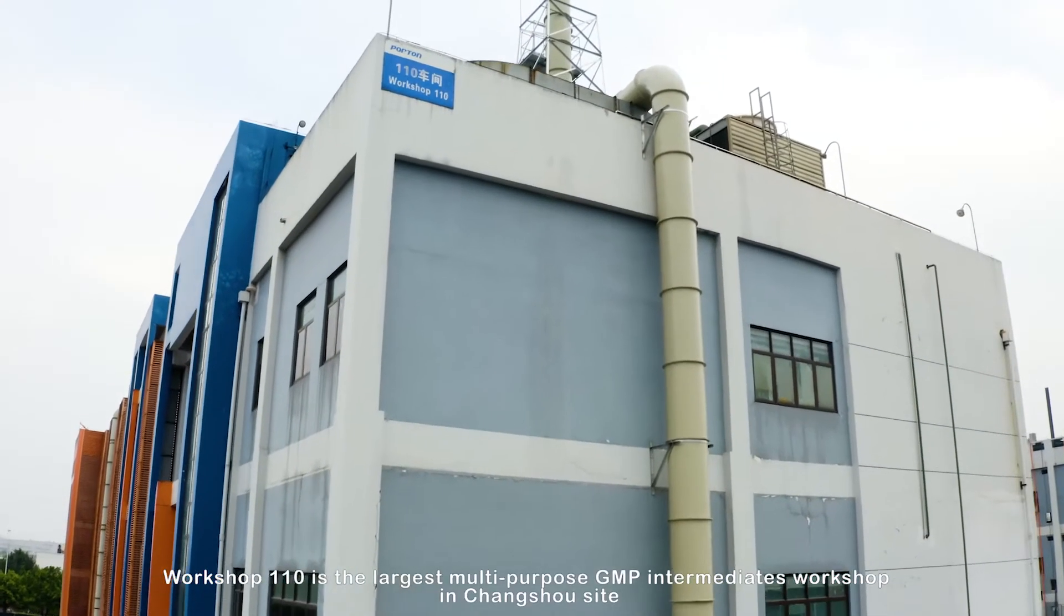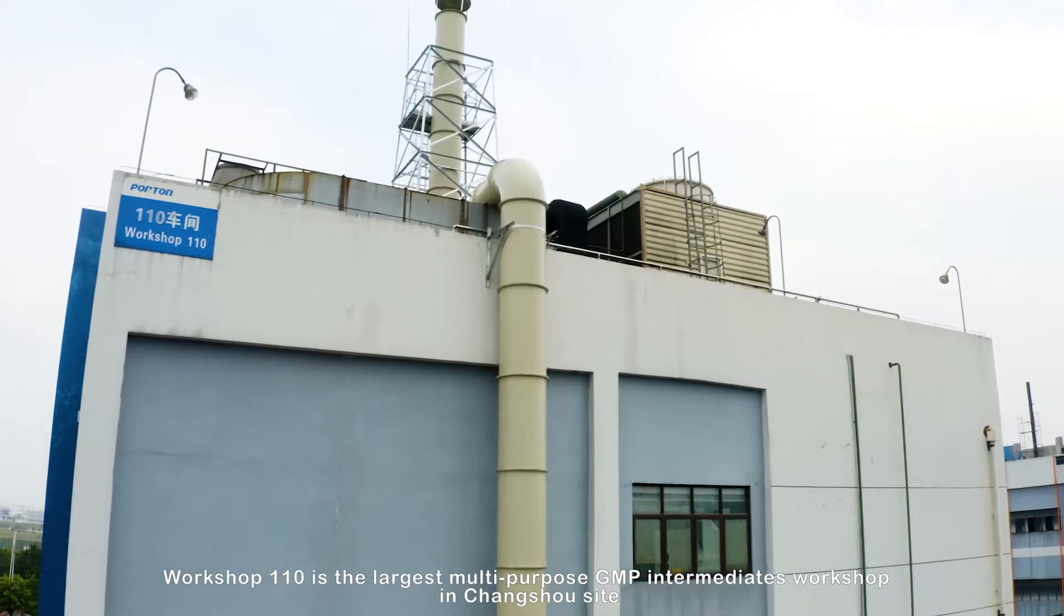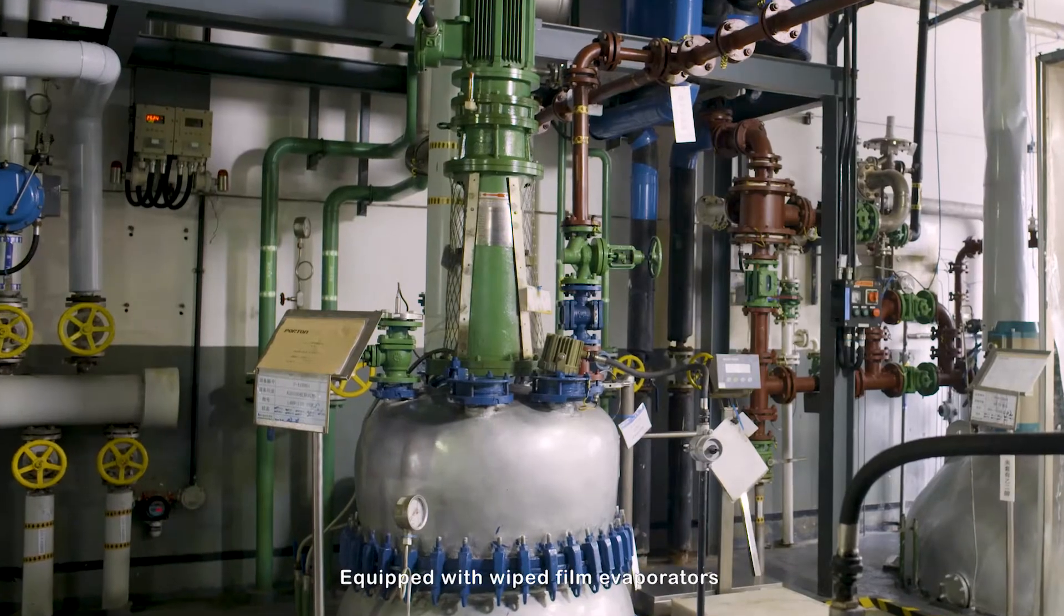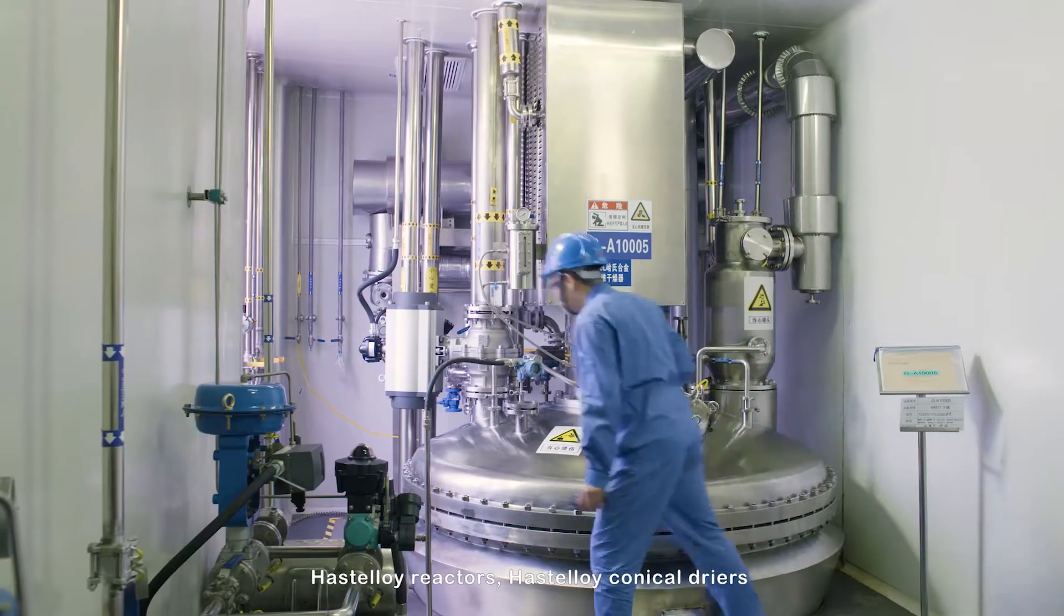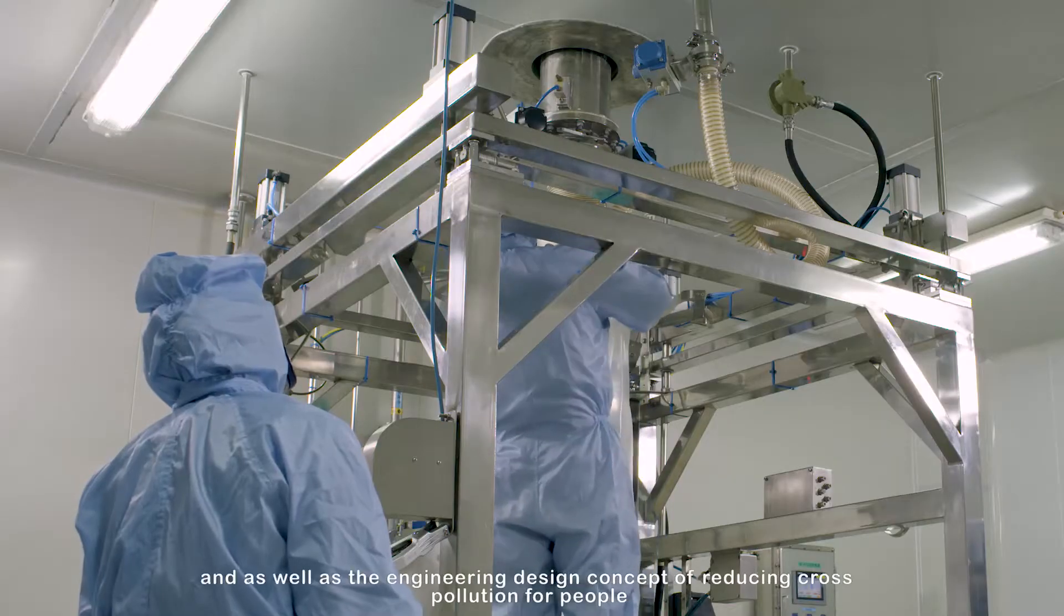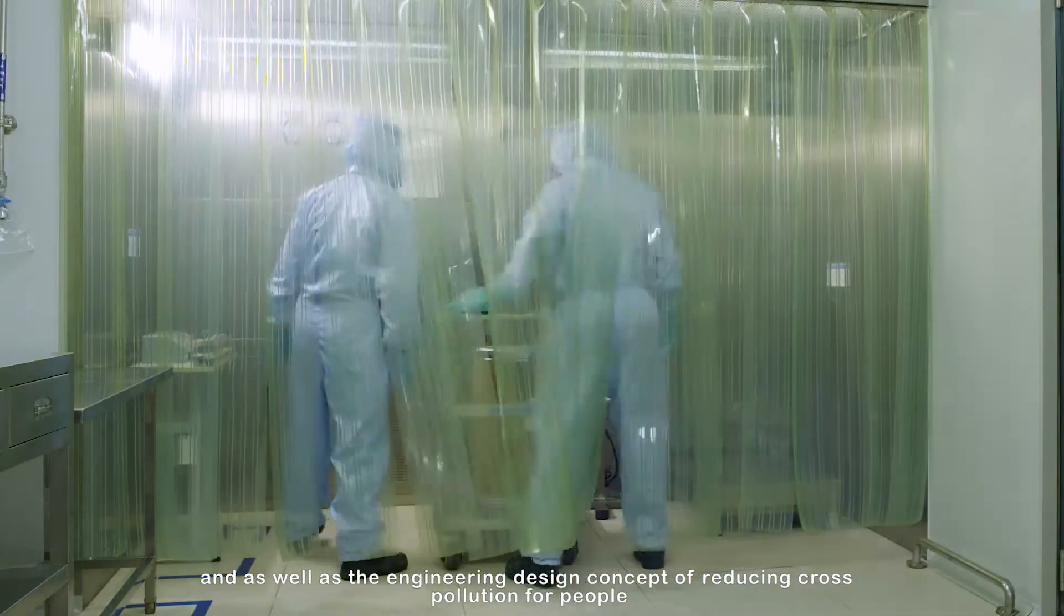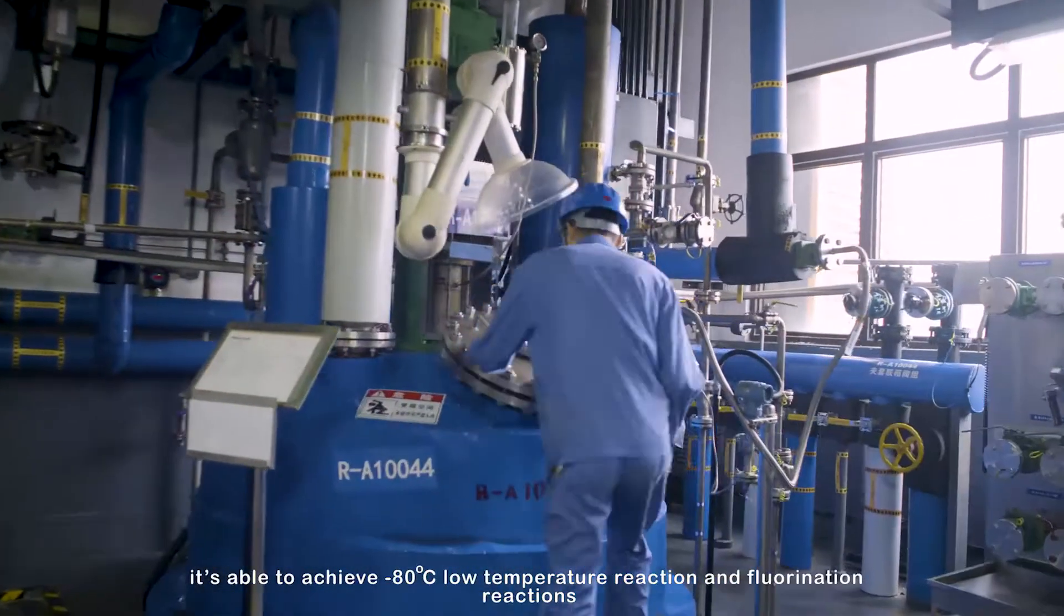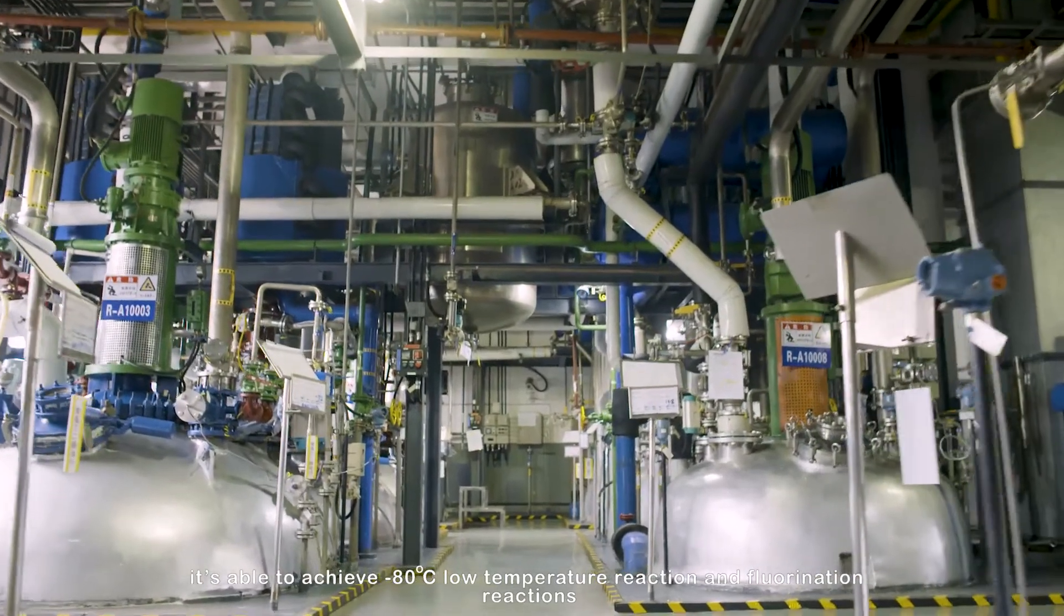Workshop 110 is the largest multi-purpose GMP intermediates workshop in Changshou site. Equipped with wide-film evaporators, hastelloy reactors, hastelloy conical dryers, and liquid material transfer equipment, and as well as the engineering design concept of reducing cross-pollution for people, it's able to achieve minus 80 centigrade degree low-temperature reaction and fluorination reactions.